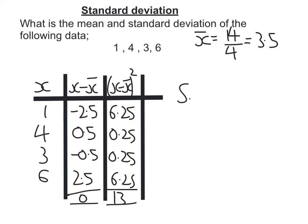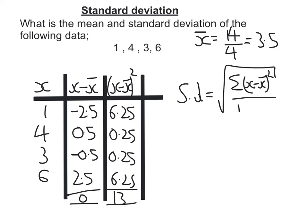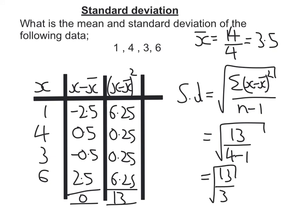Now to work out the standard deviation — remember the formula, and we'd always state the formula first — it's the square root of the sum of (x minus x̄) squared, over n minus 1. For this question, the sum of (x minus x̄) squared is 13, and n minus 1 is 3. So the standard deviation is the square root of 13 over 3, which as a decimal is 2.08.